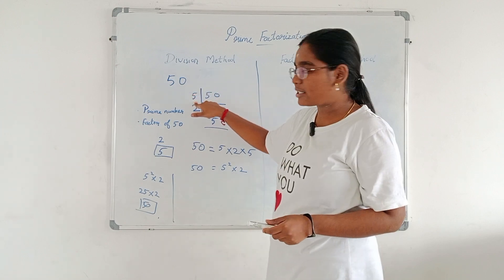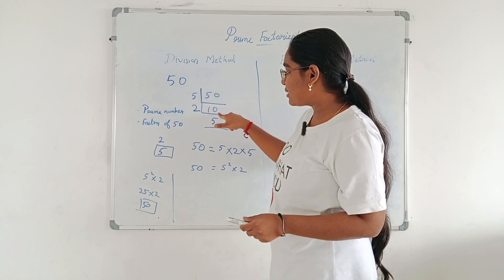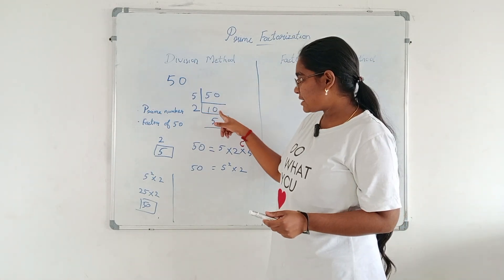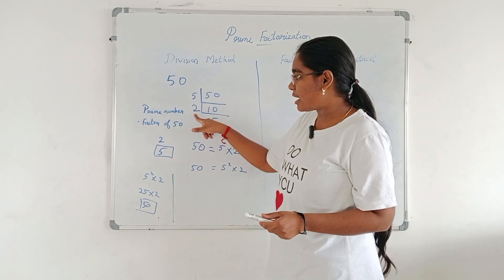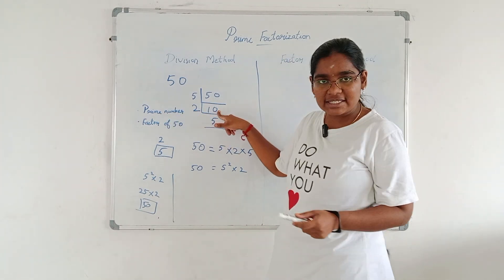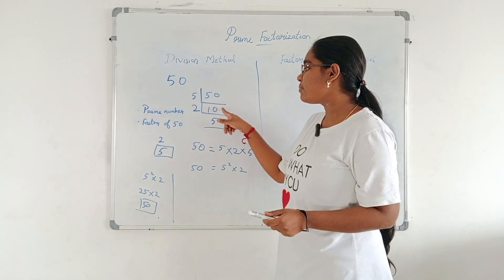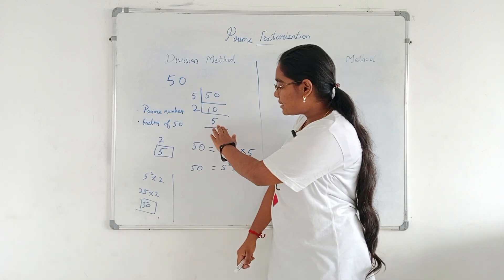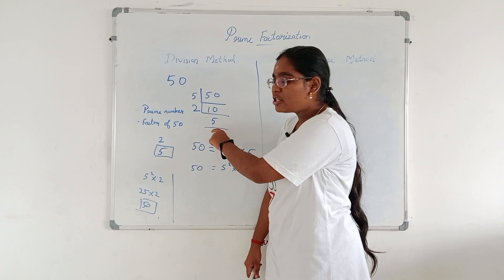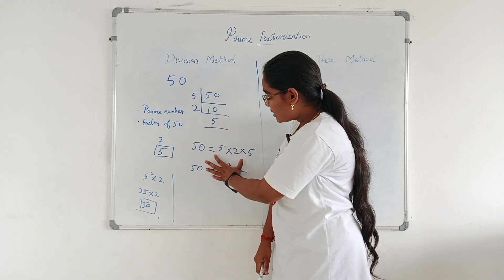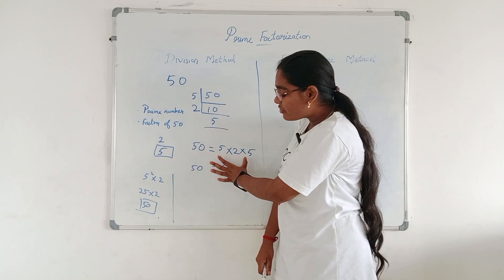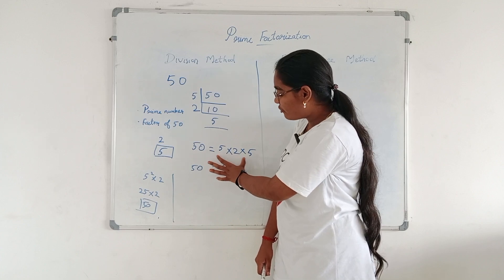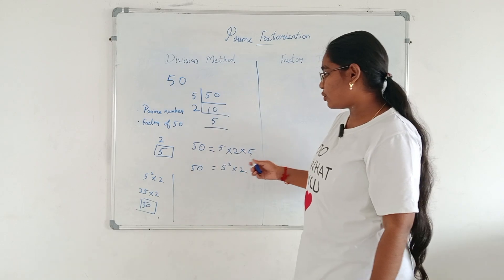5 is a factor of 50, so in the 5 table, 5 into 10 gives 50 — so I put 10 here. Next, for this 10, I choose a number that is a prime number and a factor of 10. In the 2 table, 10 comes 5 times. At last, 5 is a prime number so I leave here. So 50 equals 5 into 2 into 5.